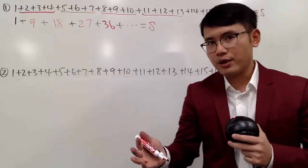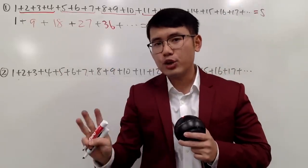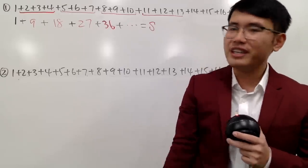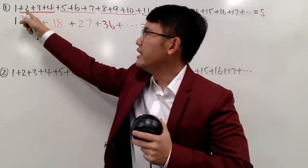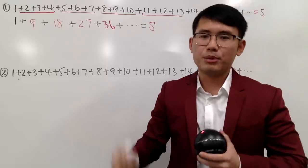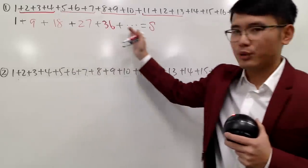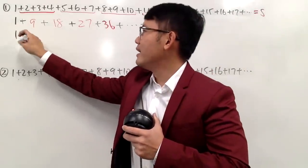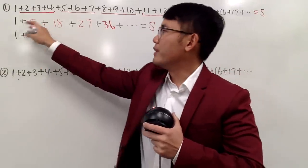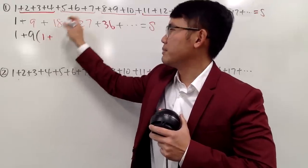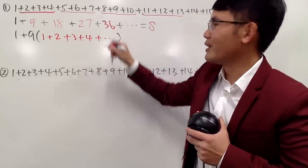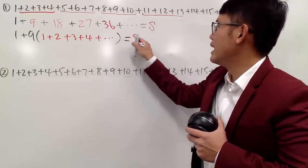When you add 3 consecutive integers and the middle one is a multiple of 3, the sum will be a multiple of 9. You can see it by writing the middle as 3k, then the others are 3k minus 1 and 3k plus 1. Add them up and you get 9k — a multiple of 9. So all the grouped numbers in red are multiples of 9. Factoring out 9, you get 9 times (1 plus 2 plus 3 plus 4 plus ...), which is still equal to S.